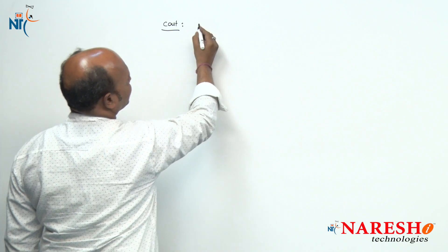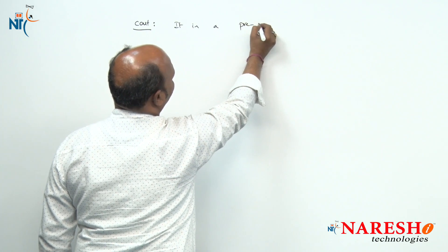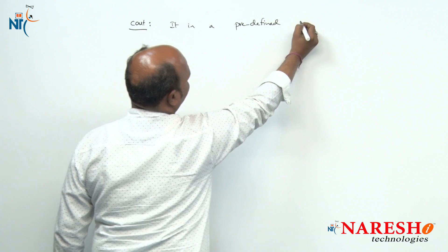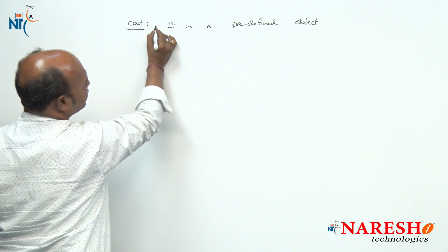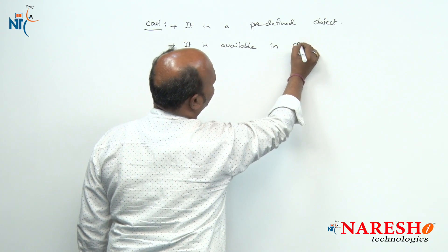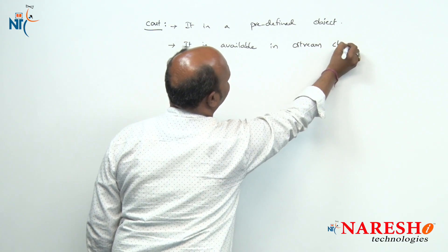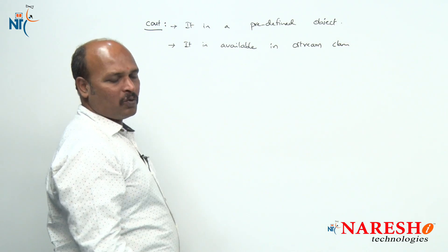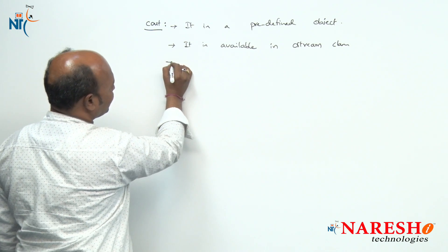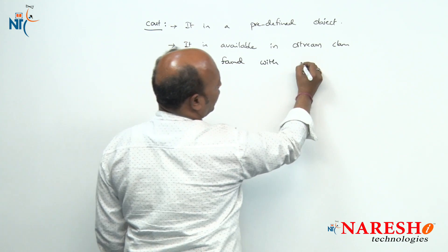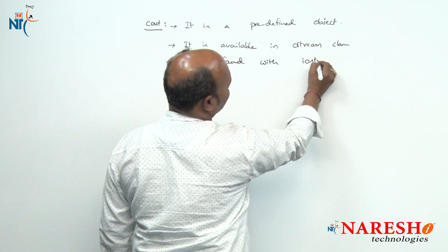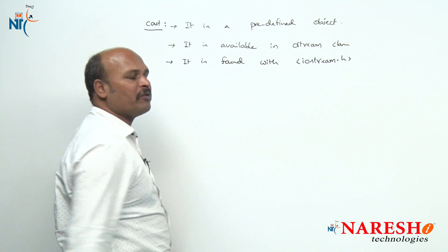First we are going to discuss about cout. Cout is a predefined object available in the ostream class. It is found in iostream.h, meaning it belongs to the iostream.h header file.